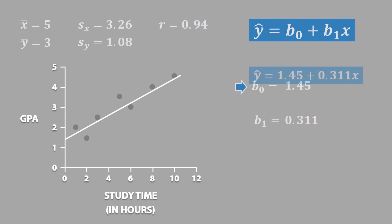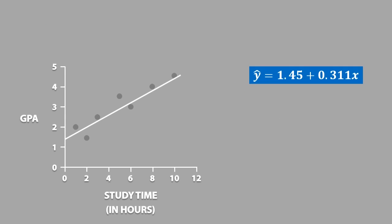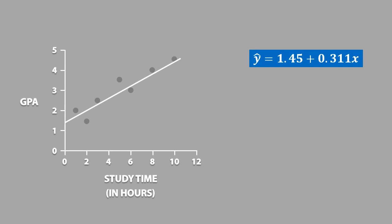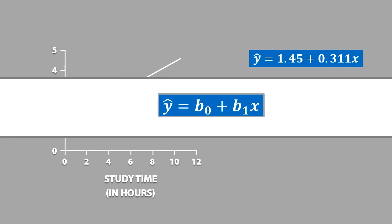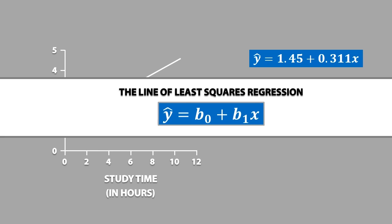Therefore, the equation for the regression line will be y-hat equals 1.45 plus 0.311 times x. This means that the value of the y-intercept corresponds to 1.45, and the value of the slope corresponds to 0.311. When you calculate a line using this formula, it can also be called the line of least squares regression.